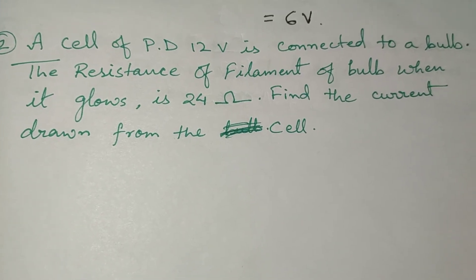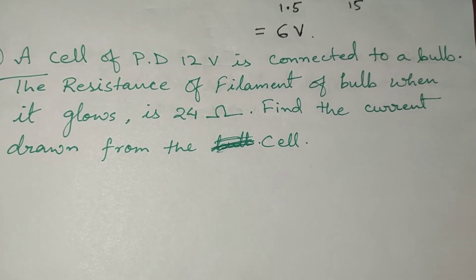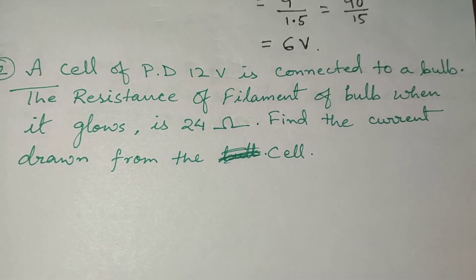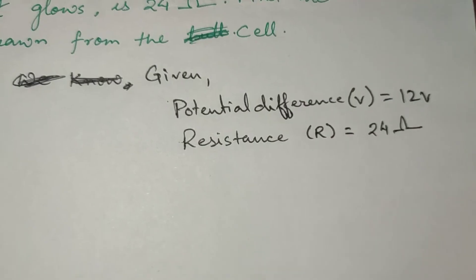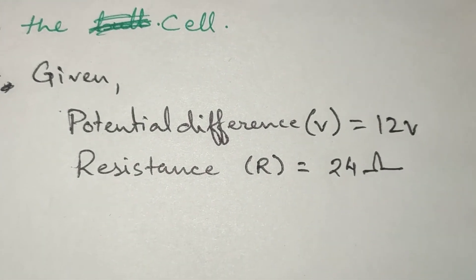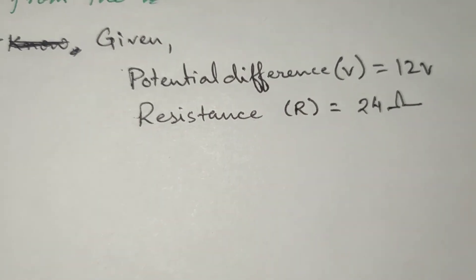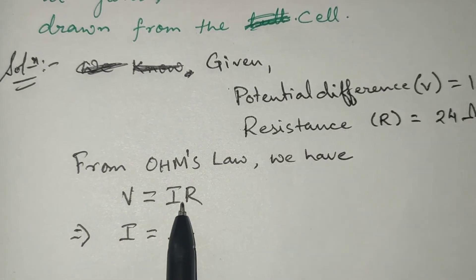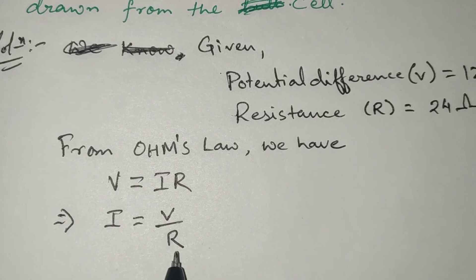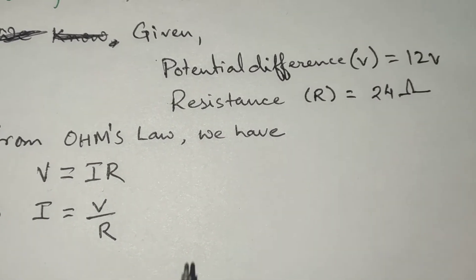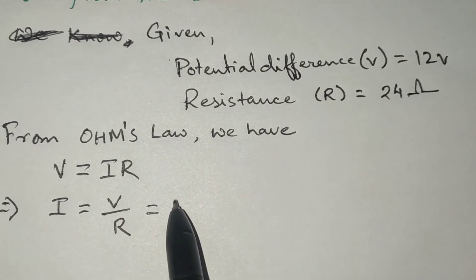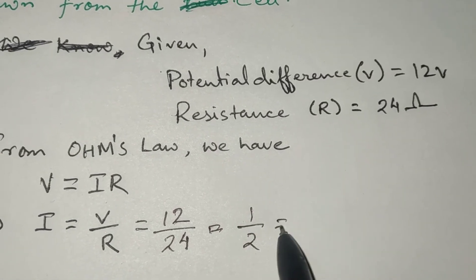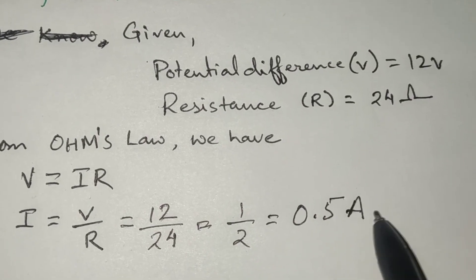The next question: a cell of potential difference 12 volt is connected to a bulb. The resistance of the filament of the bulb when it glows is 24 ohms. Find the current drawn from the cell. Potential difference is 12 volt and resistance R is 24 ohms. From Ohm's law, V equals IR, so I equals V upon R. Substituting: I equals 12 volt divided by 24 ohms, giving 0.5 ampere.